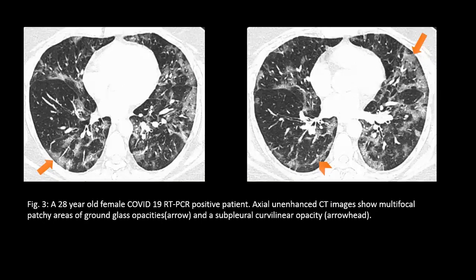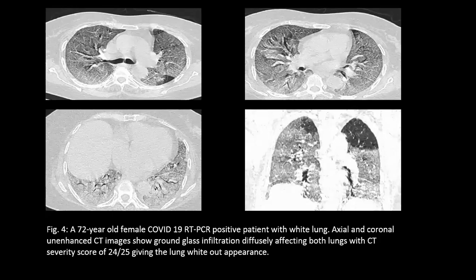In this axial unenhanced CT, we can see multifocal patches of ground glass opacity as shown by the arrows, and subpleural curvilinear lines shown by the arrowheads. This coronal unenhanced CT image shows diffuse ground glass opacity of both lungs with a CT severity score of 24 out of 25.